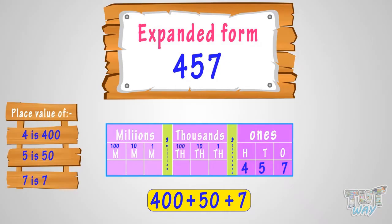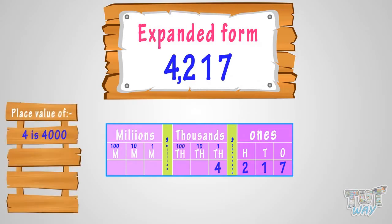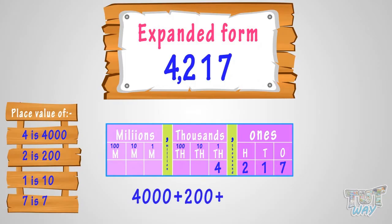Let's take another example. Here we have the number four thousand, two hundred and seventeen. If we have to write this in expanded form, we write the place value of each digit: the place value of four is four thousand, the place value of two is two hundred, the place value of one is ten, and the place value of seven is seven. So we write: four thousand plus two hundred plus ten plus seven. This is the expanded form for four thousand, two hundred and seventeen.